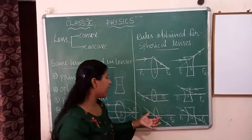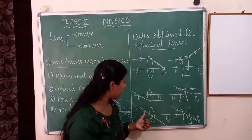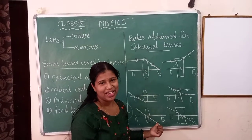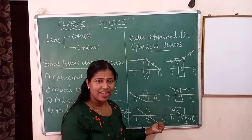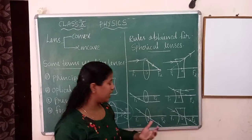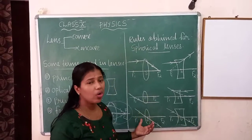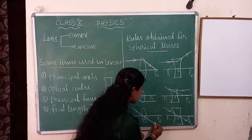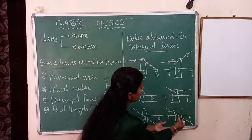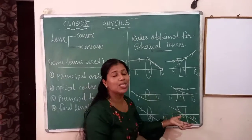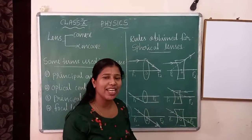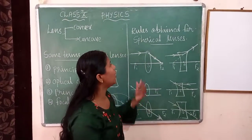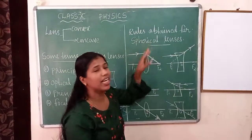The third rule: a ray of light passing through the optical center. Unlike a mirror where the path is retraced, in a lens the ray goes straight without bending. This applies to both convex and concave lenses. These are the three rules obtained for spherical lenses.